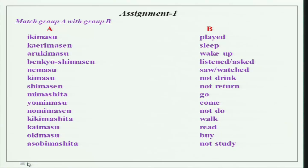The first assignment was to match Group A with Group B, which you have been doing from Lesson 1. These are verbs in the left column — column A — and the meanings in column B. You also have verbs in present tense, past tense, and negative. Please properly try to do them and repeat after me.